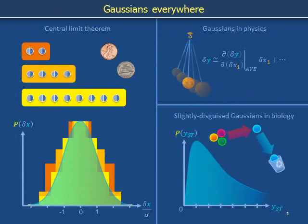In this video, we have explained how the central limit theorem can be used to suggest that Gaussian distributions might be prevalent in physics labs. We have also explained how the central limit theorem could be used to suggest that Gaussian distributions could be prevalent in biological systems in a slightly disguised form.